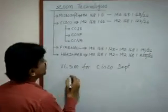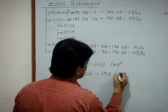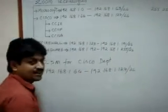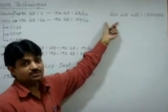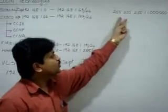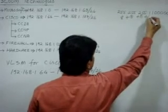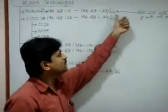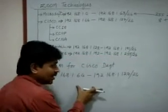The Cisco department's subnet range is 192.168.1.64 to 192.168.1.127, with a prefix of /26. This is the customized subnet mask we got in the previous video: 255.255.255.192. It has 26 bits altogether — eight plus eight plus eight plus two bits — which is why it is /26. We can write this subnet mask in slash notation as /26.